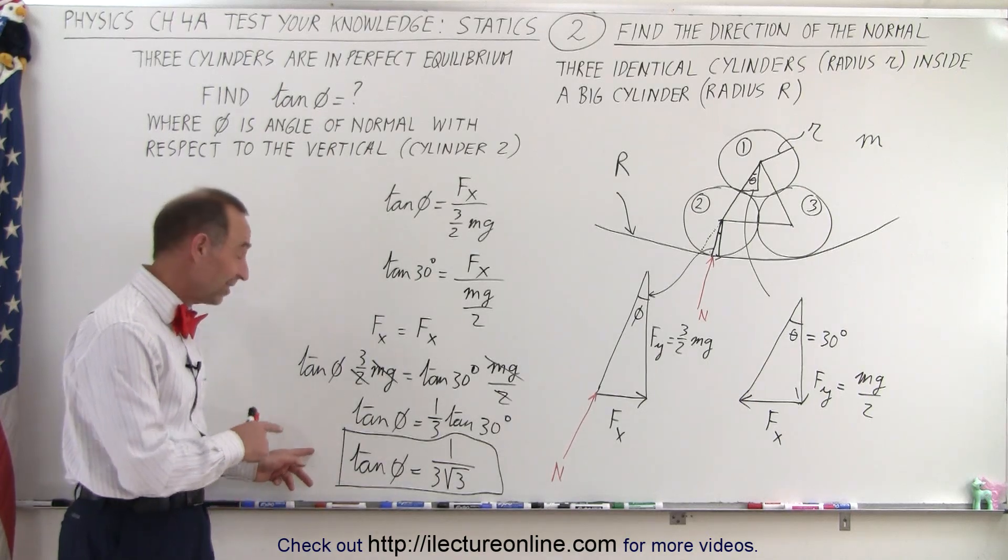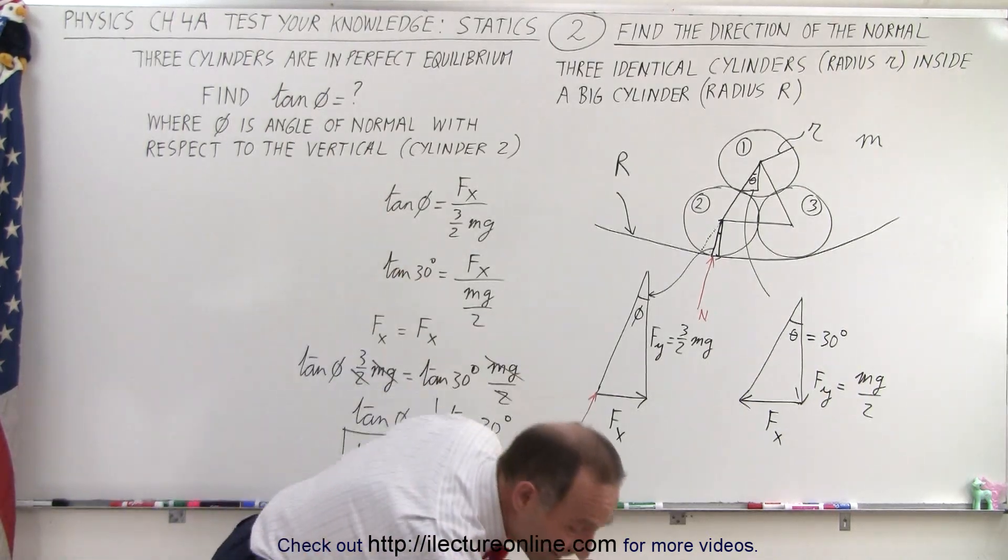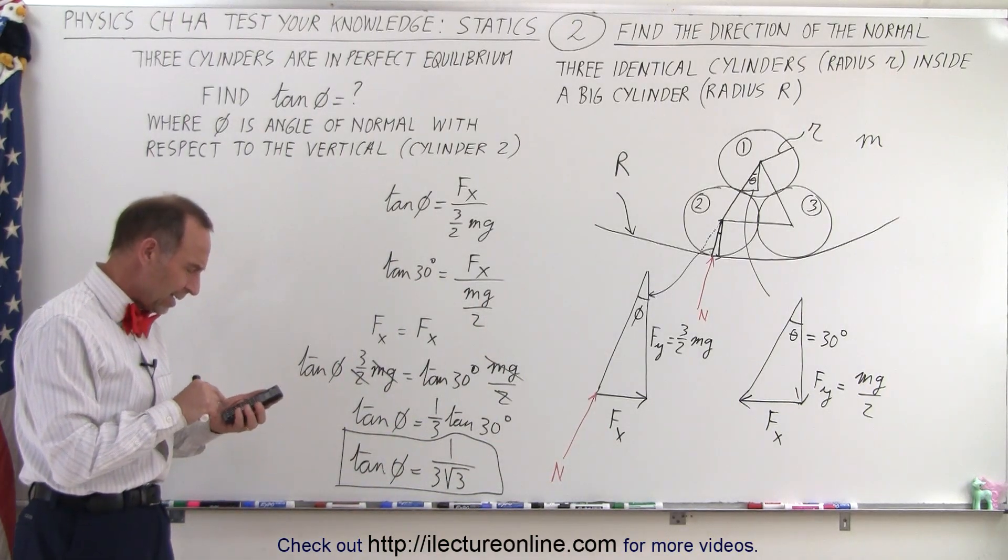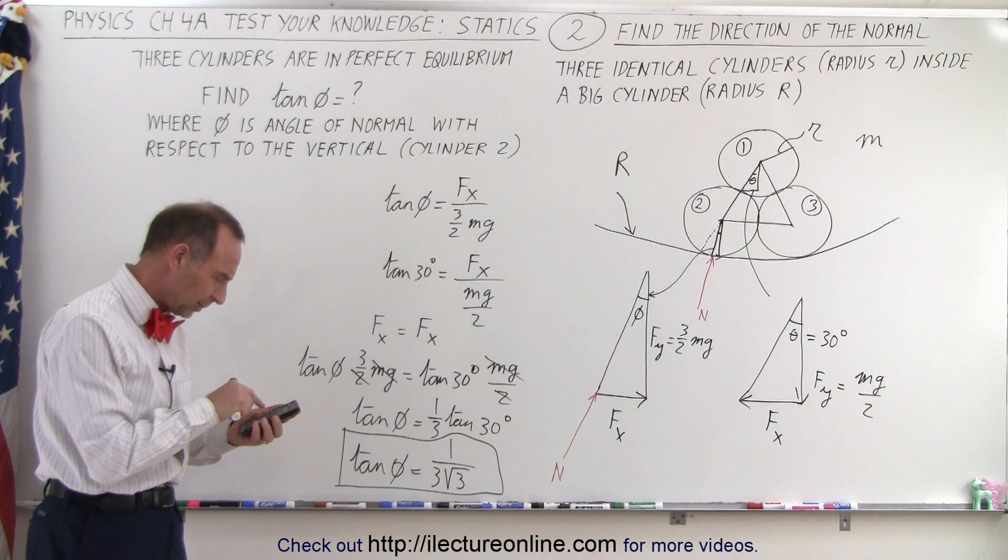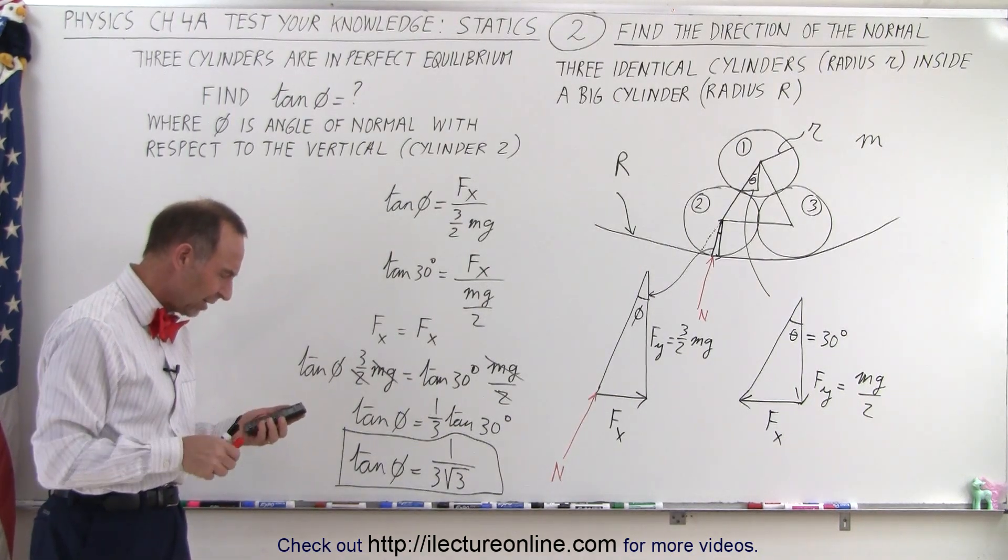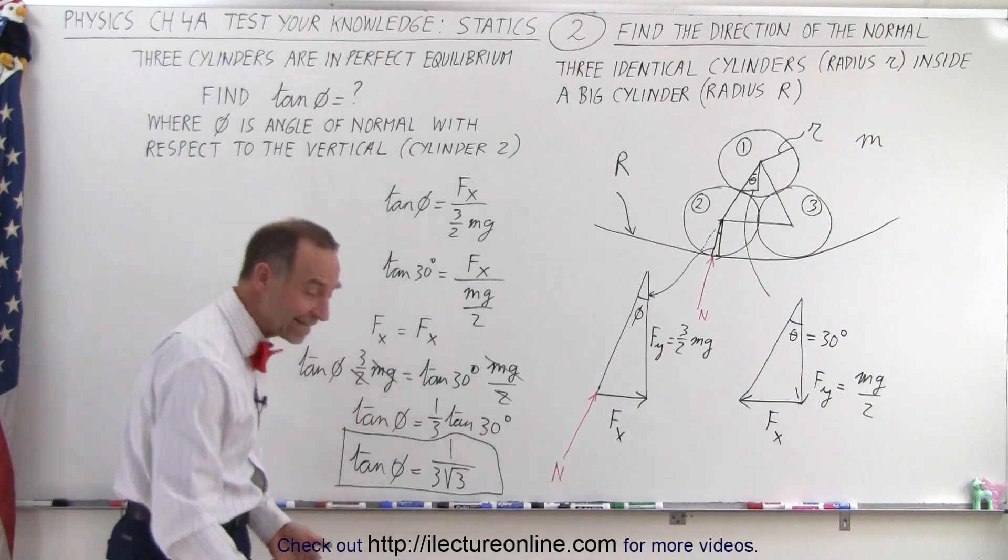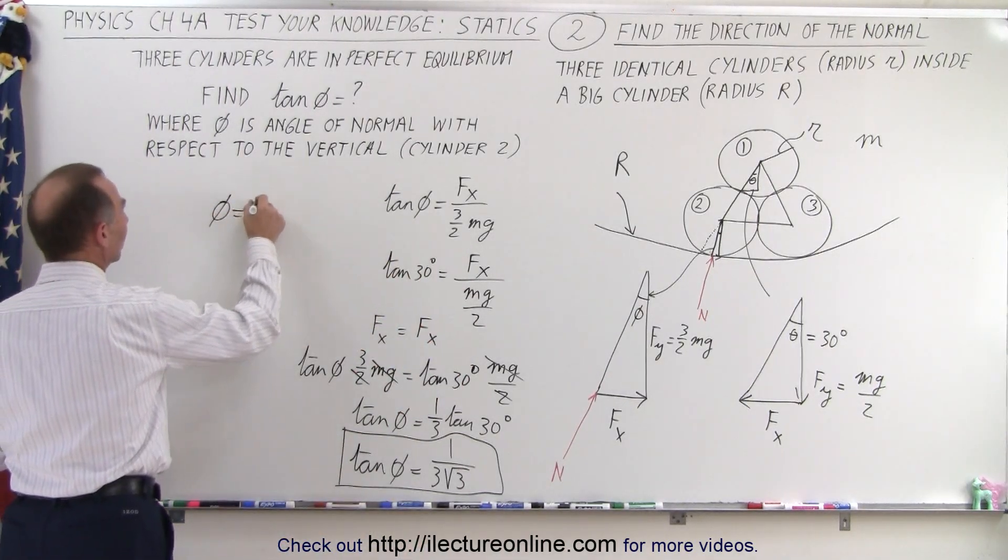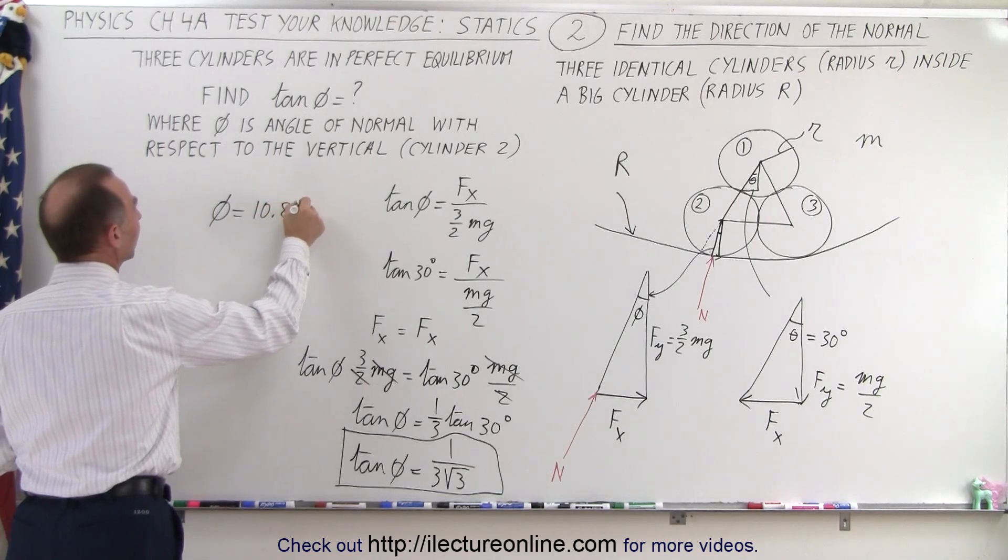For those who are interested in knowing what the value of the angle is, let's go ahead and calculate it. So we have 3 times the square root of 3, take the inverse, and take the inverse tangent of that, which is 10.89 degrees, which means that phi equals 10.89 degrees.